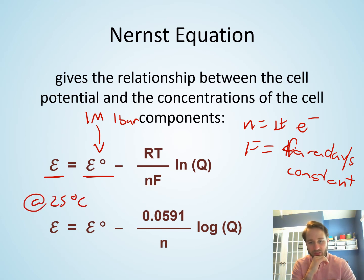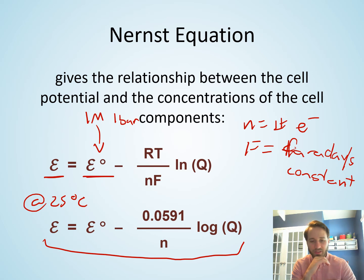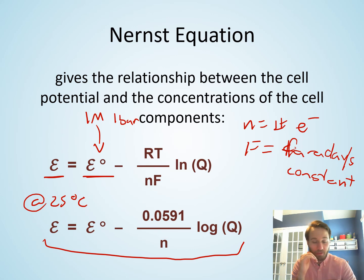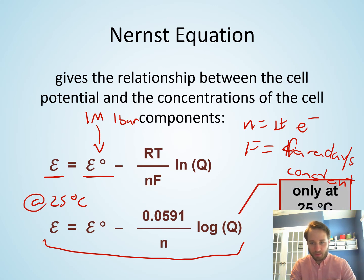At 25 degrees Celsius, the Nernst equation simplifies to: cell potential equals the standard cell potential minus 0.0591 divided by N, times the log of Q. That is the simplified Nernst equation at 25°C, and you do not need to memorize it.